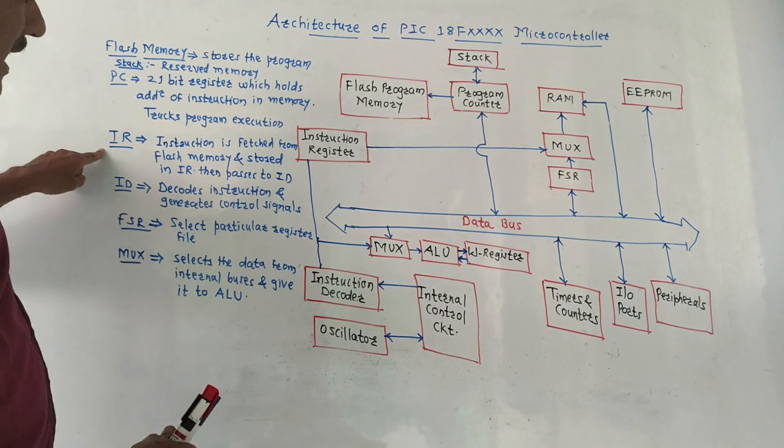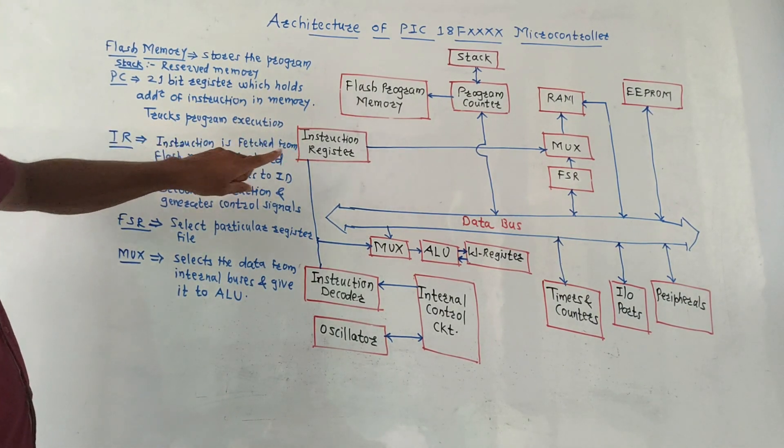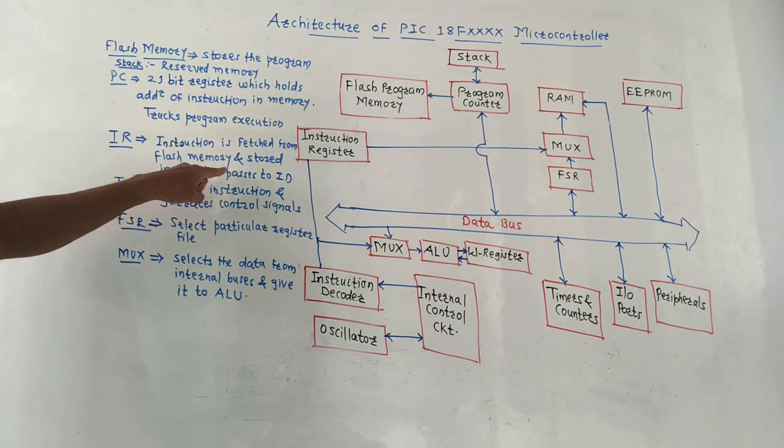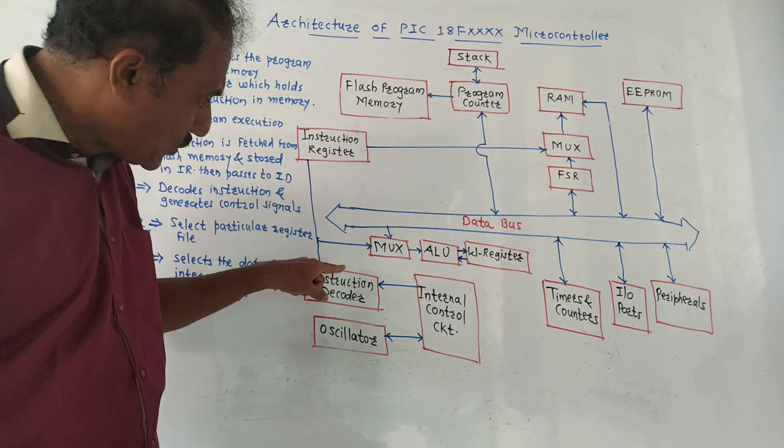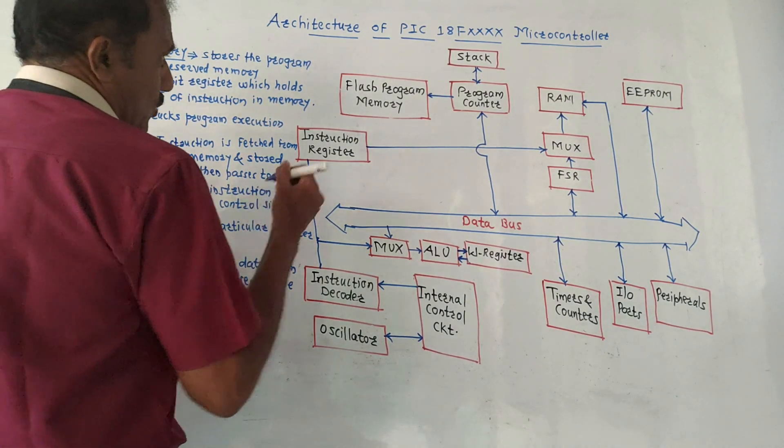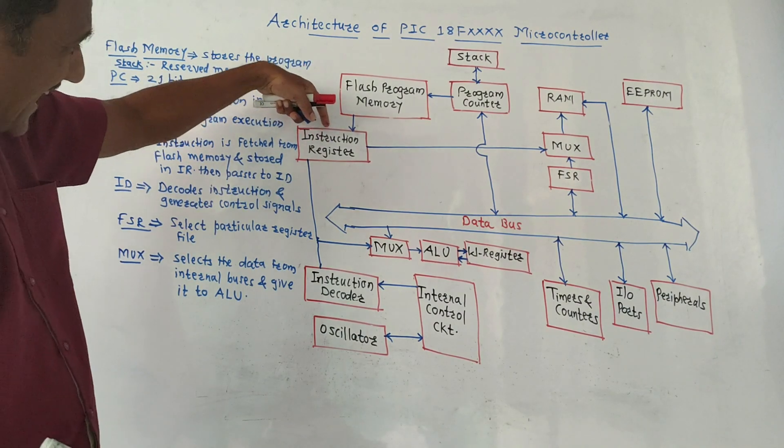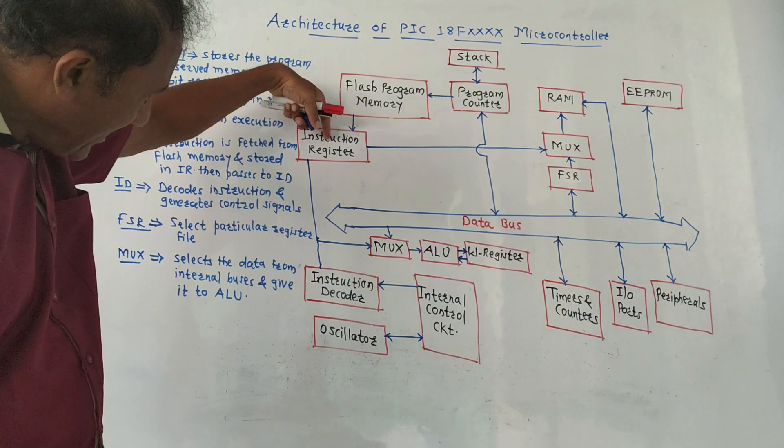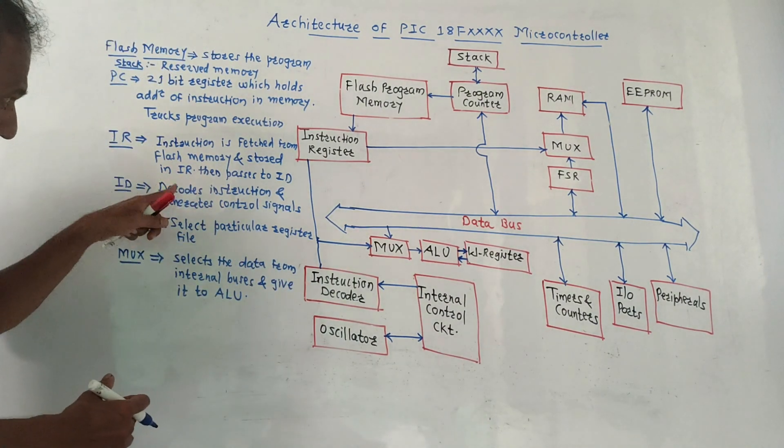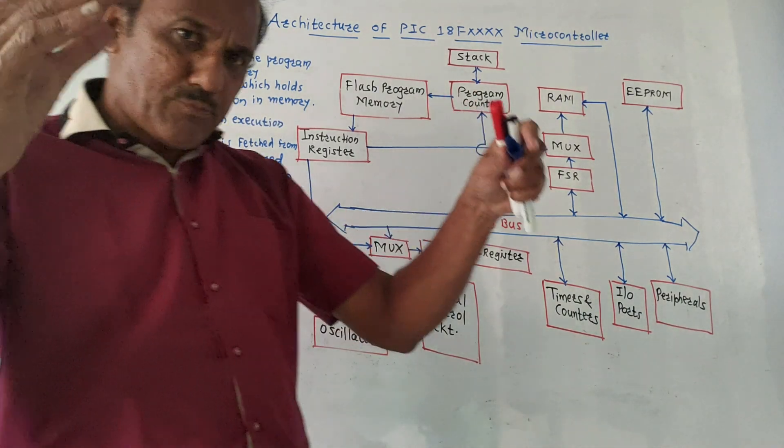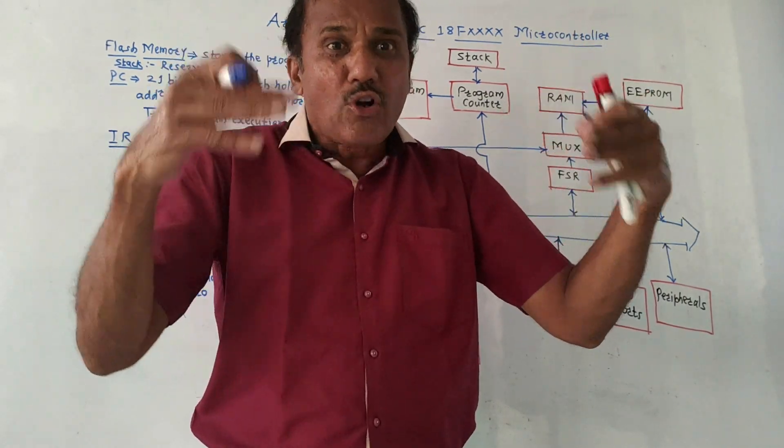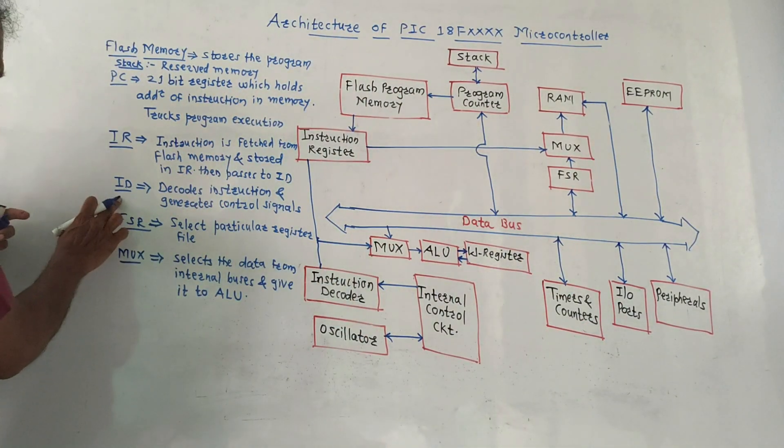Next is IR, instruction register. This block is basically used to fetch the data from flash memory and stores it in instruction register, and then it passes to the instruction decoder. Instruction decoder, as the name indicates, decodes the instruction and generates control signal. Whichever instruction we are going to study, it will decode and accordingly generate control signal.